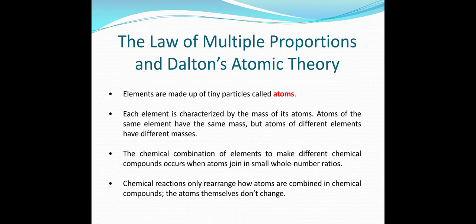Dalton's atomic theory tells us that elements are made of tiny particles called atoms, and each element is characterized by the mass of its atoms. Atoms of the same element have the same mass, but atoms of different elements have different masses. For example, diatomic oxygen is made up of the same kind of atom, so both oxygen atoms have the same mass, whereas hydrogen and oxygen in water have different masses.